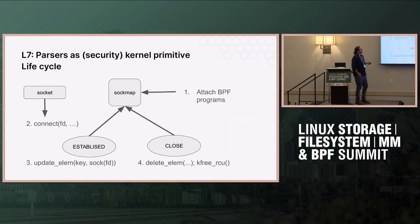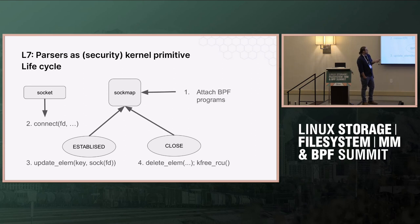We use SockMap for this. SockMap is a particular map type. It can have BPF programs attached — those BPF programs will be like your TLS parsers or your HTTP parsers. You basically create the map and attach the programs. Then every time you see a socket being created or connected — we do it on established — we put that socket in the map. Once that socket's in the map, it's bound to this BPF program, and so everything sent or received over that socket will run through this BPF program.